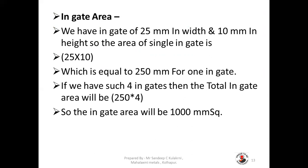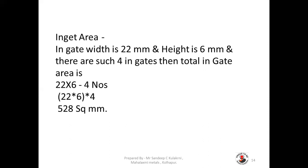If we have four such ingates in our system, the total ingate area will be 250 × 4, that is 1000 mm square for the total system. Let us take another example where ingate width is 22 mm, height of the ingate is 6 mm, and there are four such ingates in the system. So the total ingate area will be 22 × 6 × 4, that is 528 square mm.